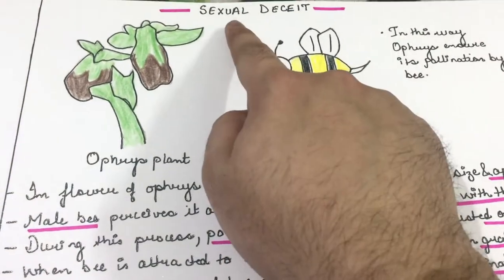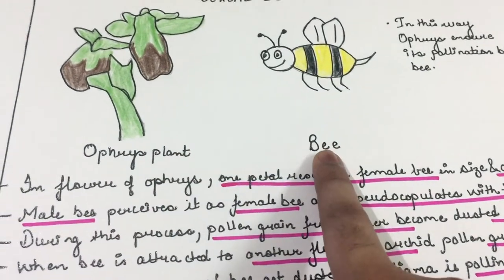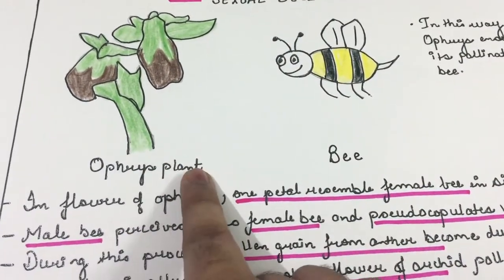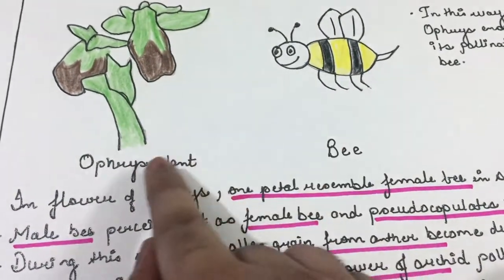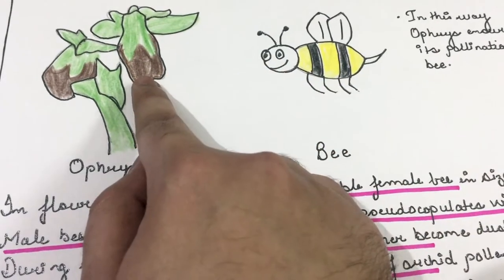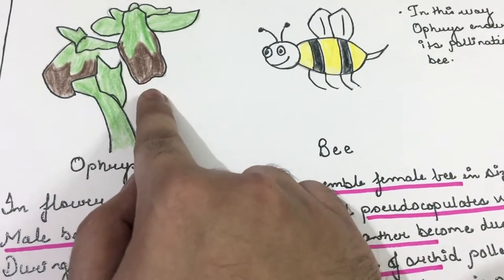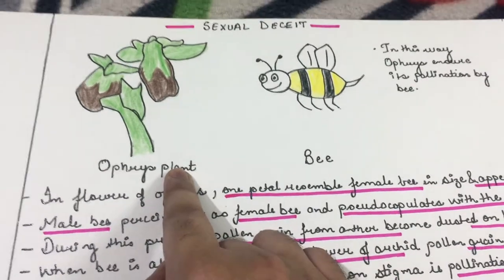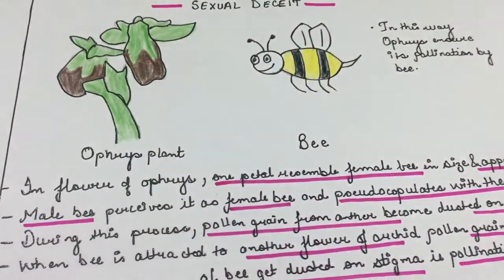Now let us understand what is sexual deceit. The relationship between the Ophrys plant and the bee is an example of sexual deceit. One petal of the Ophrys flower resembles a female bee, so the male bee perceives it as a female bee and pseudo-copulates with the petal. During this process, the Ophrys plant is pollinated, ensuring pollination through sexual deceit.